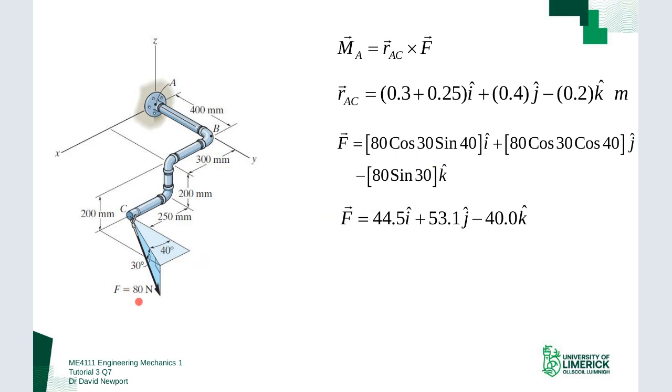If I start with the Z component, that's the easiest one. If I do 80 times the sine of 30 degrees, that'll give me this vertical component here which is aligned with the Z-axis. For this force, that would have to be acting in a negative direction, so I have minus 80 sine 30 k-hat.